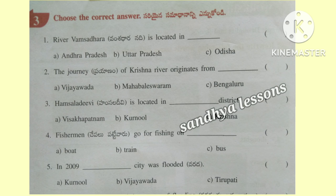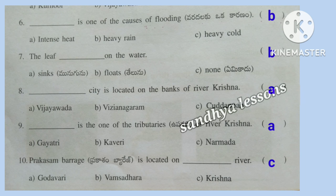Third, choose the correct answer. First: River Vamsadhara is located in Andhra Pradesh. Second: The journey of Krishna river originates from Mahabaleshwar. Third: Hamsala Devi is located in Krishna district. Fourth: Fishermen go for fishing on boat. Fifth: In 2009, Kurnool city was flooded. Sixth: Heavy rain is one of the causes of flooding. Seventh: The leaf floats on the water. Eighth: Vijayawada city is located on the banks of river Krishna. Ninth: Gayatri is one of the tributaries of river Krishna. Tenth: Prakasam barrage is located on Krishna river.